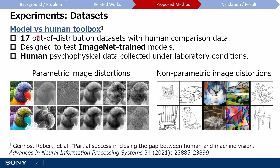The three models were evaluated on the model versus human toolbox, which contains 17 image datasets with associated human performance collected under controlled conditions. To create out-of-distribution datasets, various image perturbations were applied, including simple parametric distortions like changing the contrast, colour, or adding blurring or noise, as well as more complex non-parametric distortions like using image sketches or edge maps.